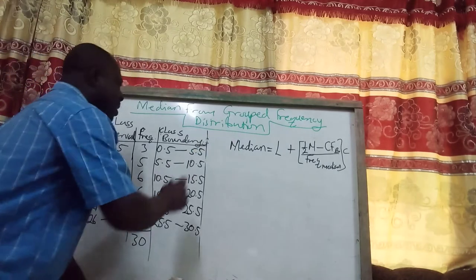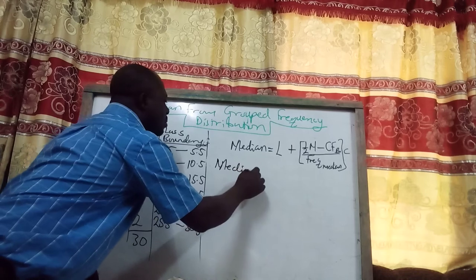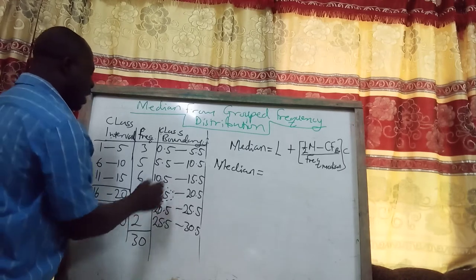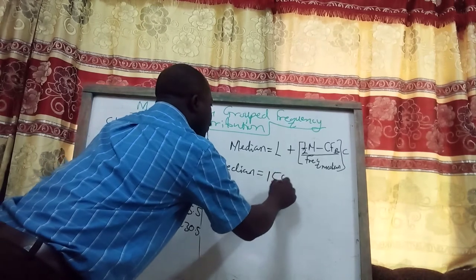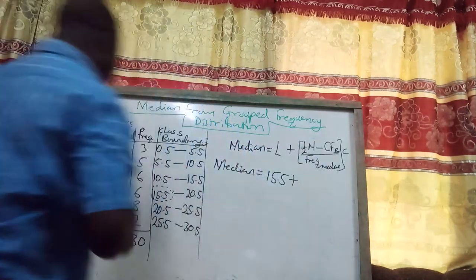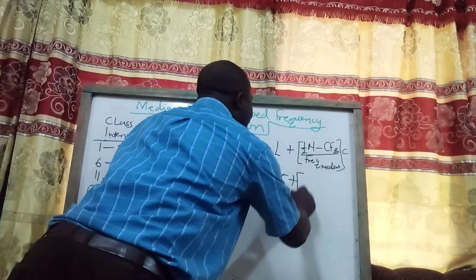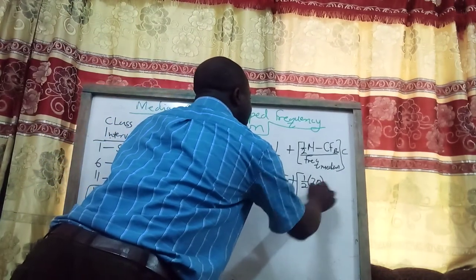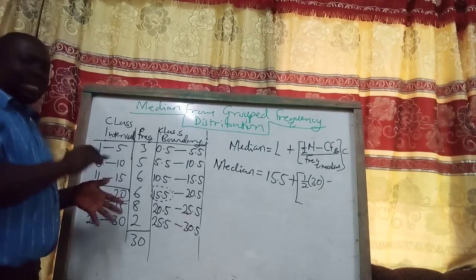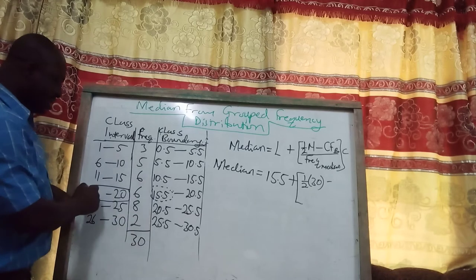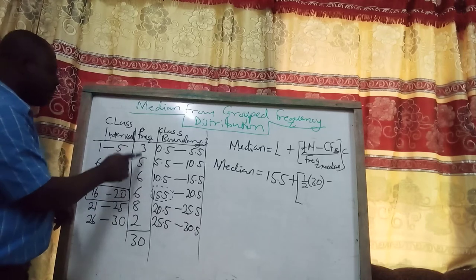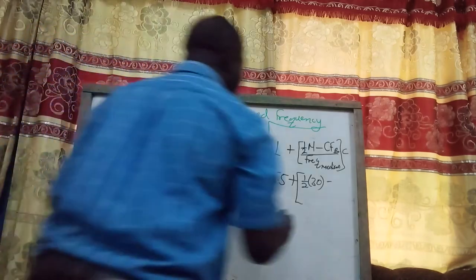The median equals L, which is 15.5, plus the bracket: half of N is half of 30. The cumulative frequencies before the median class — summing all frequencies before class 16 to 20, that is 6 plus 5 plus 3 — equals 14. So we have: 15.5 + (15 − 14) divided by the frequency of the median class, which is 6.